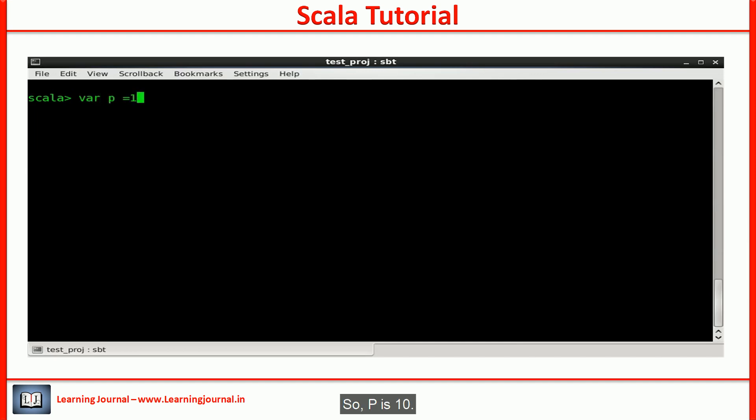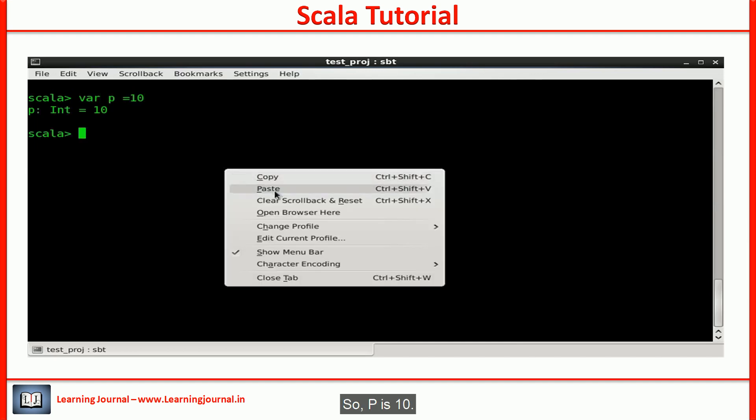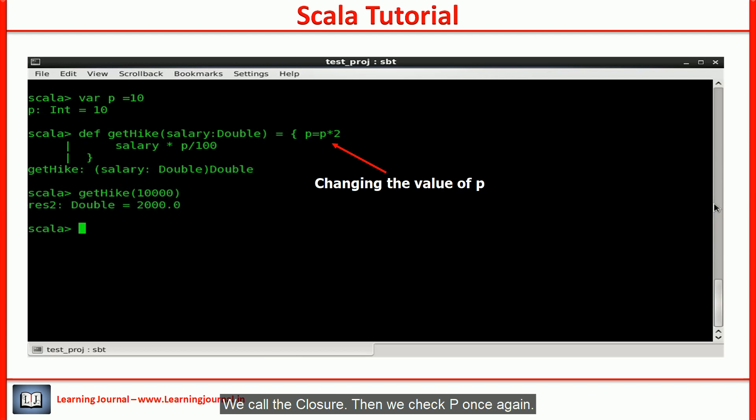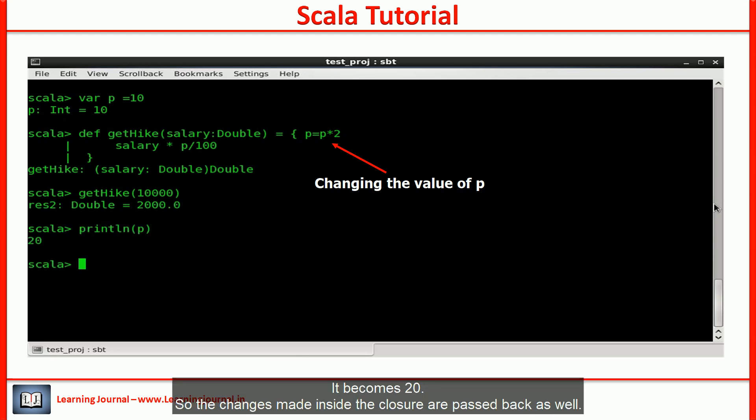So, p is 10. We call the closure. Then we check p once again. It becomes 20. So, the changes made inside the closure are passed back as well.